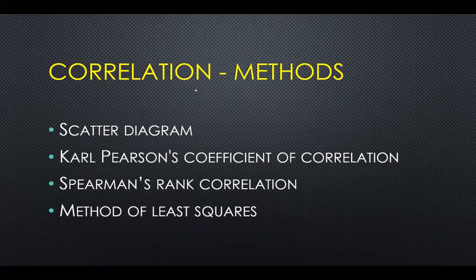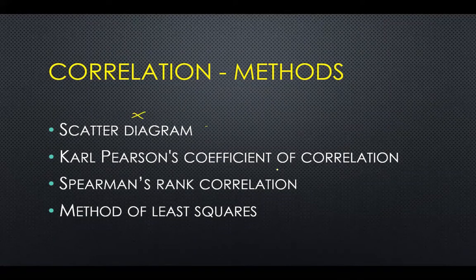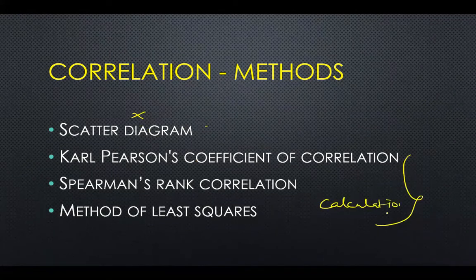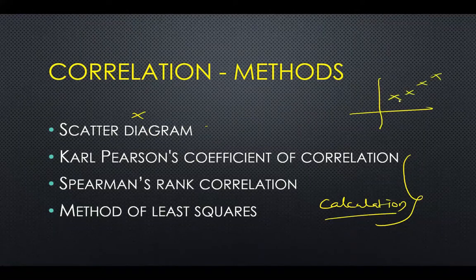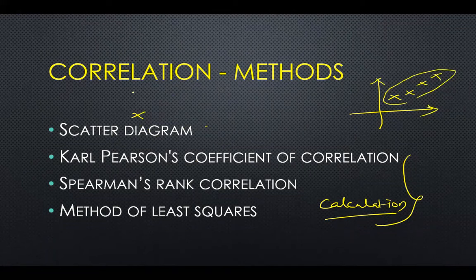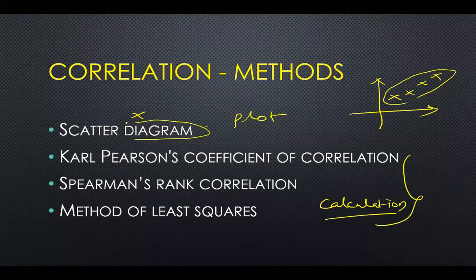The methods to study correlation are: the diagrammatic method and the calculation methods. The diagrammatic method involves plotting points on x and y axes to observe how they lie — this is called the scatter diagram, also known as a scatter plot. It is a graph that visually indicates the type of correlation.